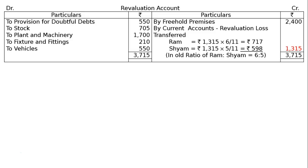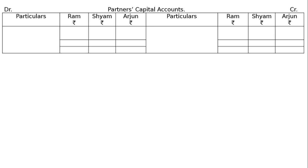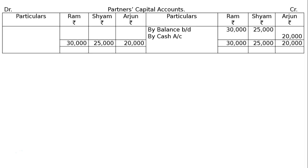Partners capital account is fixed. We draw the partners capital account in proper format for Ram, Siam, and Arjun. By balance brought down: Ram Rs. 30,000 and Siam Rs. 25,000. Arjun is admitted and brings in Rs. 20,000 as his capital — by cash account Rs. 20,000. Balance carried down remains the same as opening capital: Ram Rs. 30,000, Siam Rs. 25,000, Arjun Rs. 20,000.